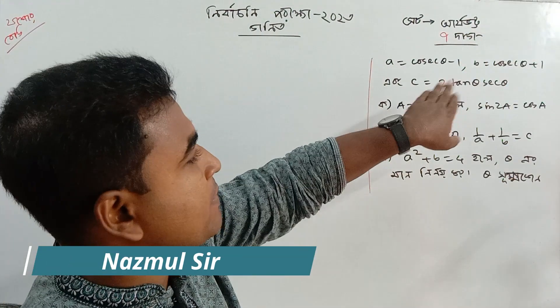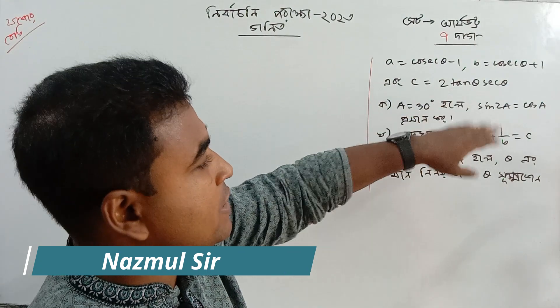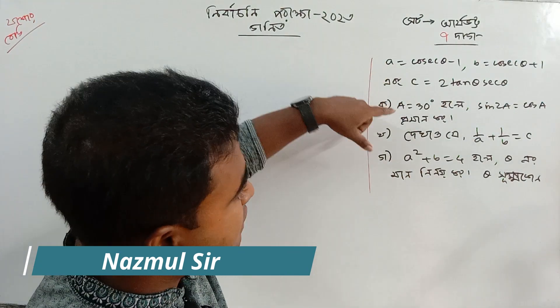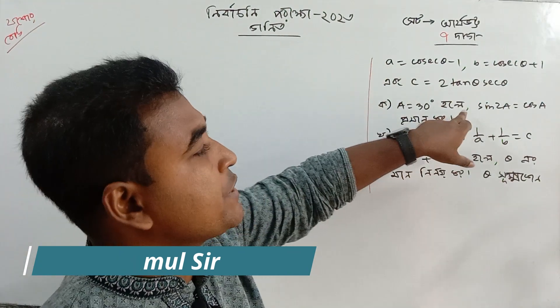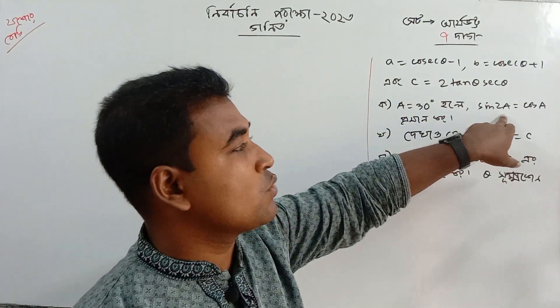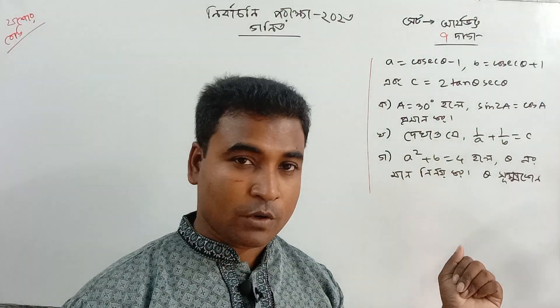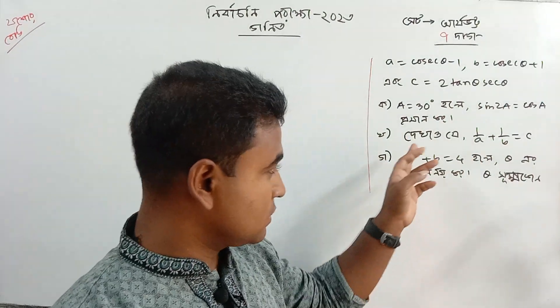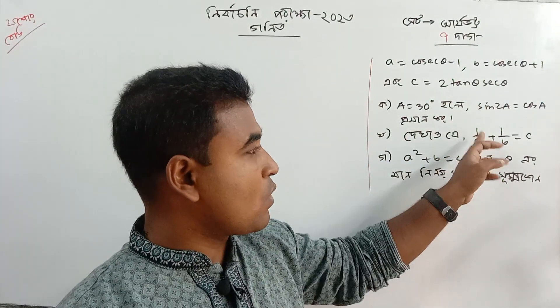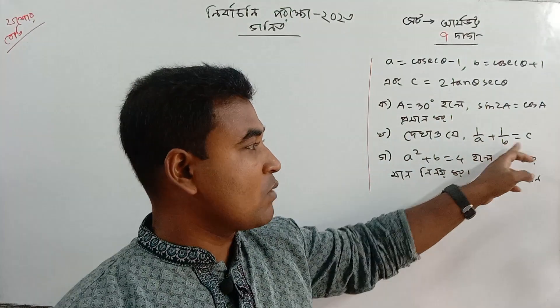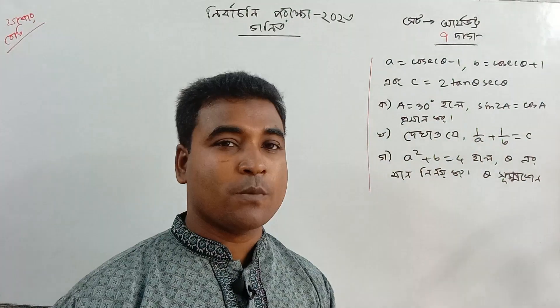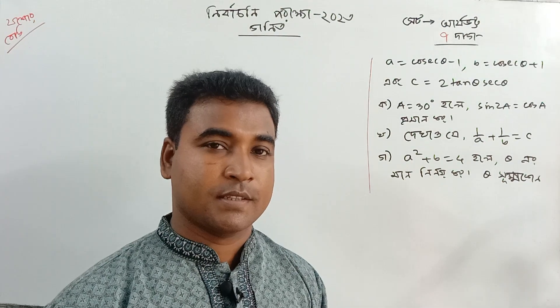The first one is A, B, and C. If you want to write: A equal to 3d sin 2a, equal to cot a. And 1 by A plus 1 by B equal to C.